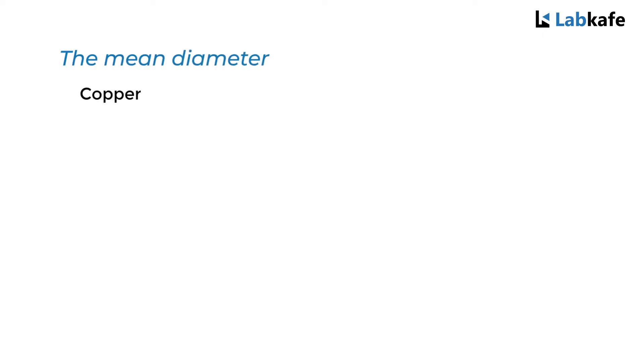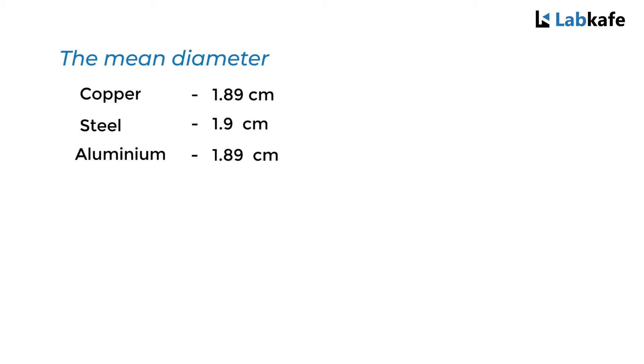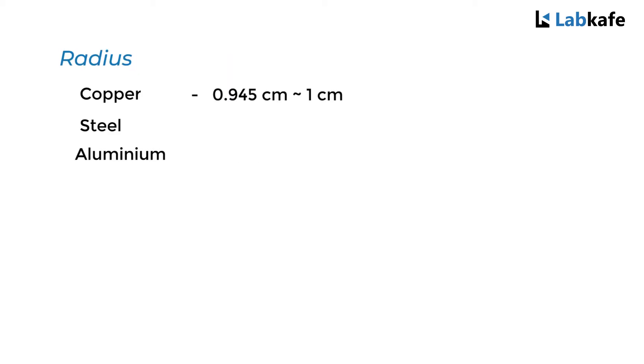Procedure. We will measure the diameter of each of the bobs. Check our previous video on how to find the mean diameter of a bob using a vernier caliper. We have found the mean diameter of copper, steel, and aluminium are 1.89 cm, 1.9 cm, and 1.89 cm respectively. Hence, the radii are 0.945 cm, 0.95 cm, and 0.945 cm respectively.